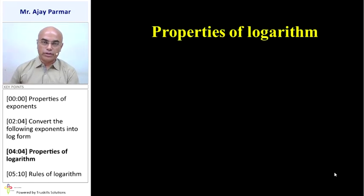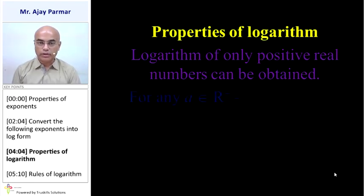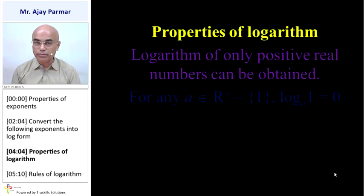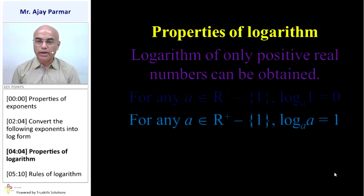Properties of logarithm: Logarithm of only positive real numbers can be obtained — we cannot obtain the log of 0 or negative numbers. For any a belonging to R-plus minus 1, that is a real positive number except 1, log 1 to the base a equals 0 — log 1 to any permissible base is 0. For the same condition of a, log a to the base a equals 1 — if the log number and the base number are the same, the answer is 1.